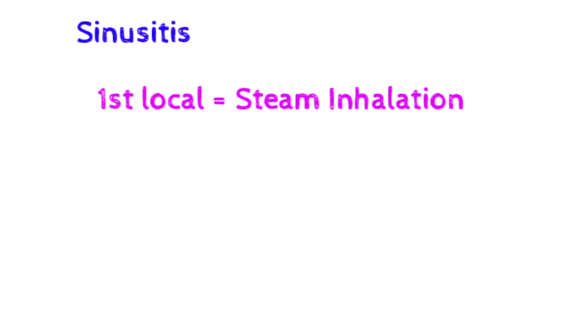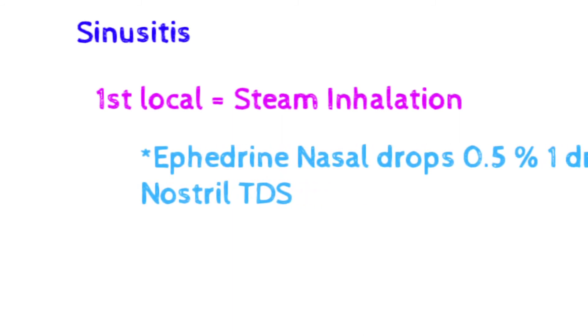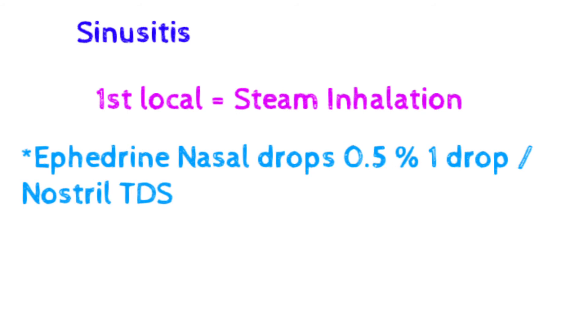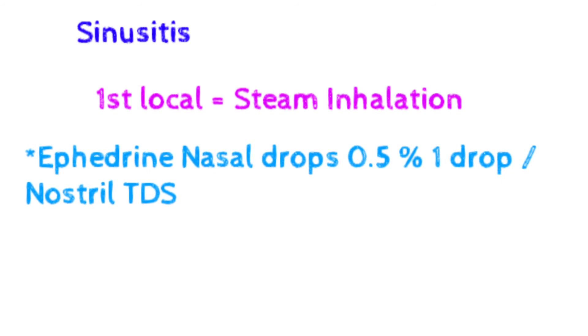Now for sinusitis: again, first we go for local treatment, then drugs. In local treatment, we give steam inhalation to the patient. If the patient has a systemic sign, then we go for drugs. The first drug is ephedrine nasal drops 0.5 percent — one drop per nostril, TDS, meaning three times a day.